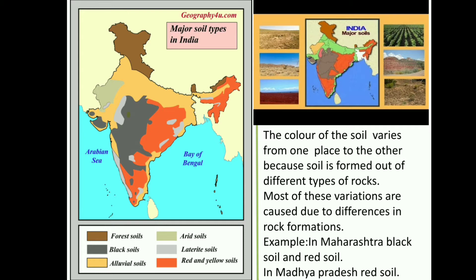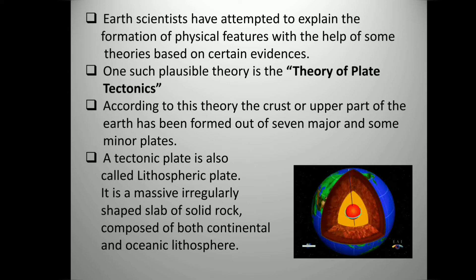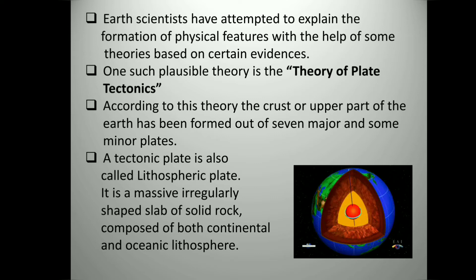For example, in Maharashtra, black soil and red soil can be seen. In Madhya Pradesh, you can see red soil. A list of different types of soils are given in the map and you can have a closer understanding of it. Earth scientists have attempted to explain the formation of physical features with the help of some theories based on certain evidences. One such plausible theory is the theory of plate tectonics.